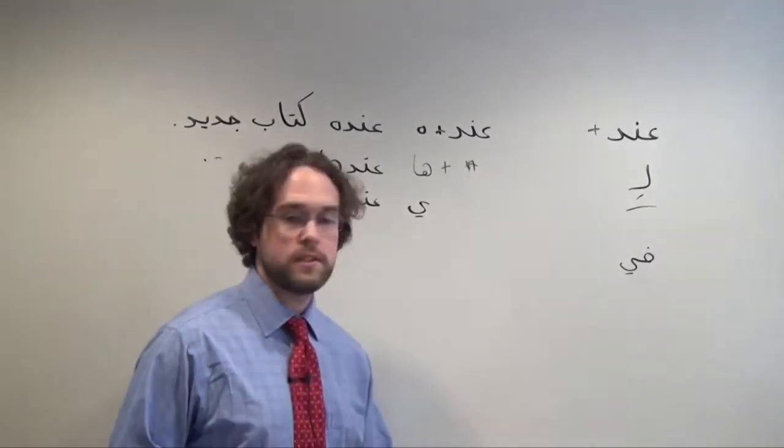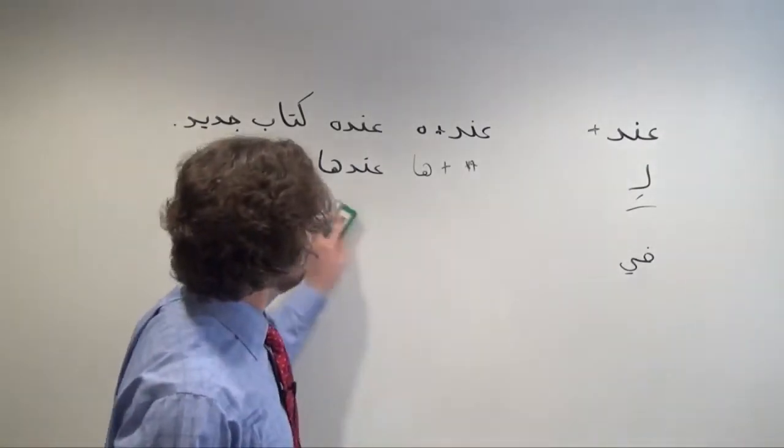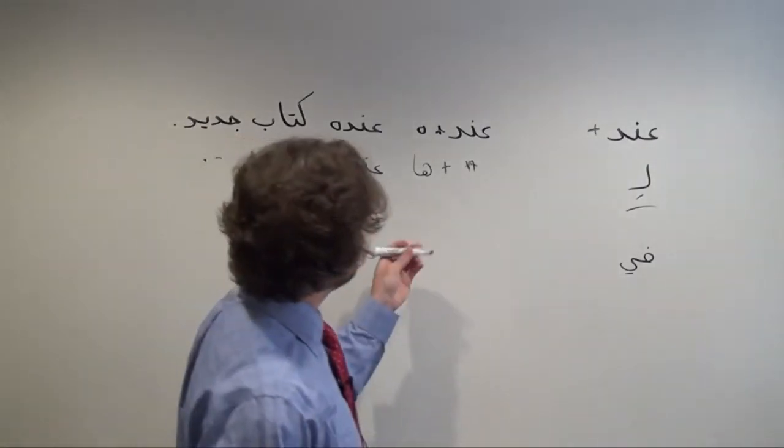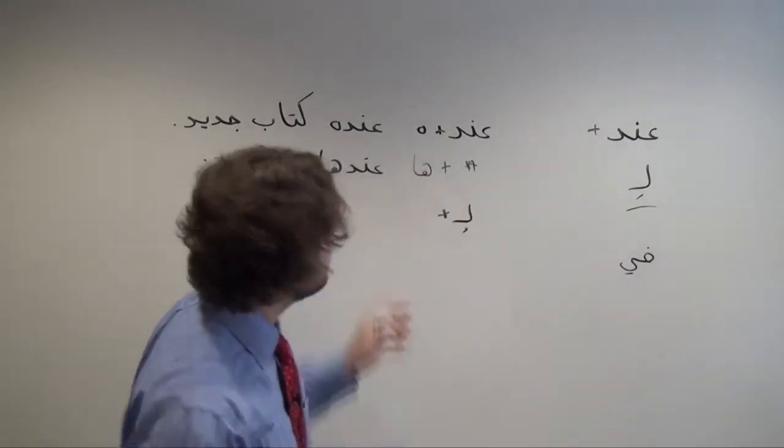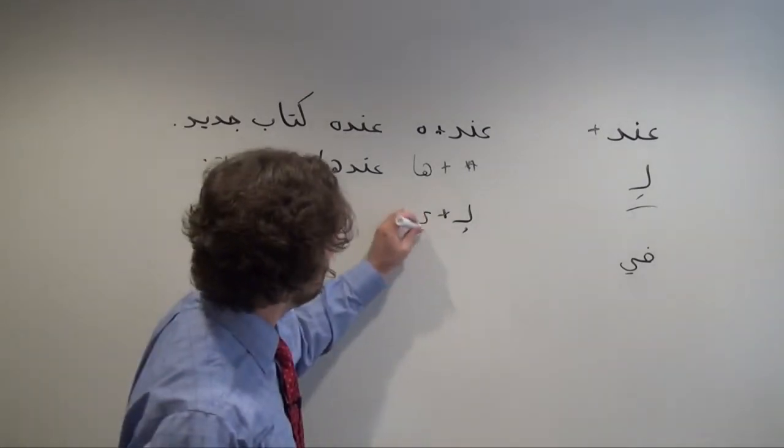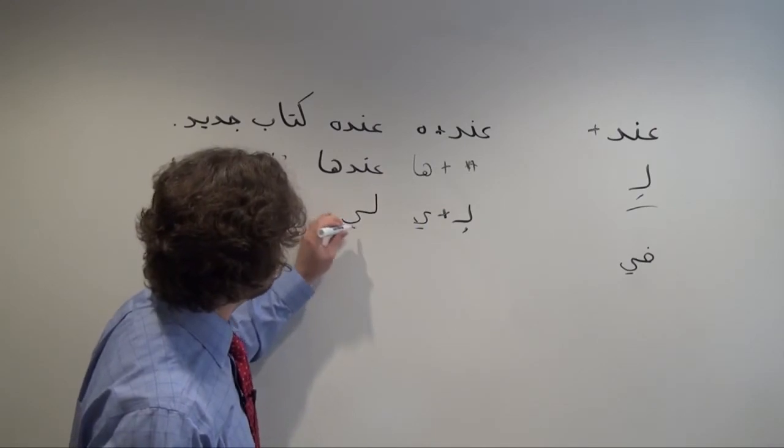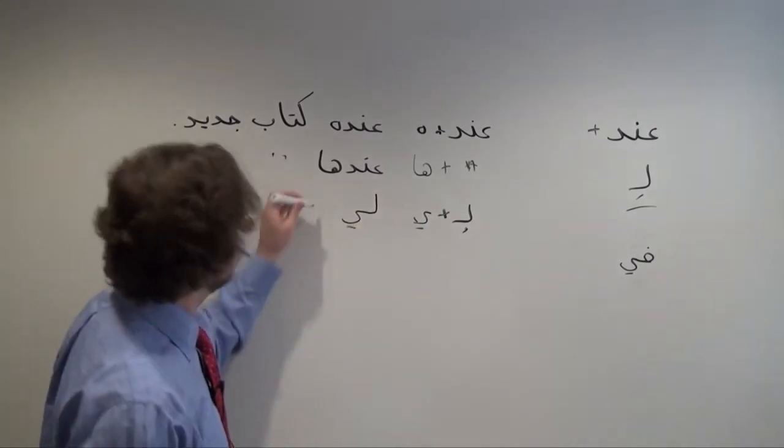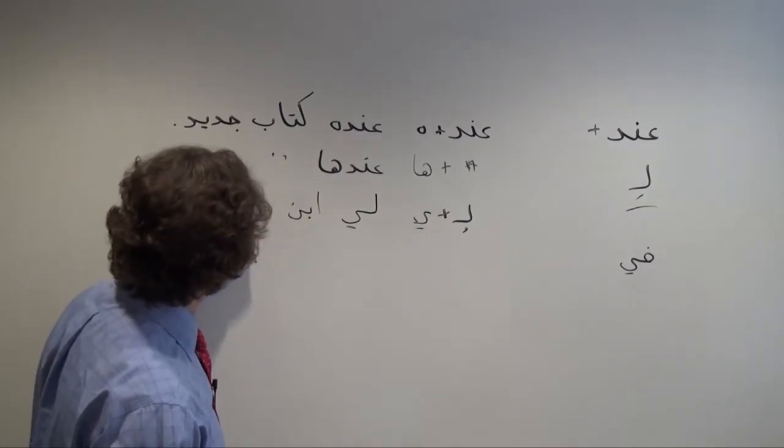So if I wanted to say, I have one son, for example, again I would take لِ, and then I would need to add the أنا possessive suffix, يَا, and then I would wind up with لِي ابن واحد.